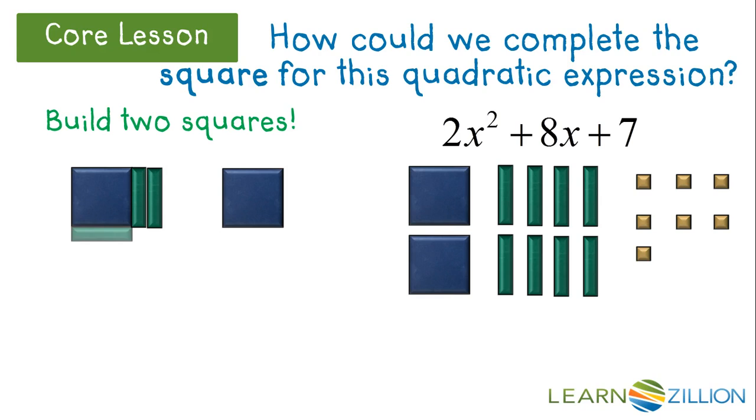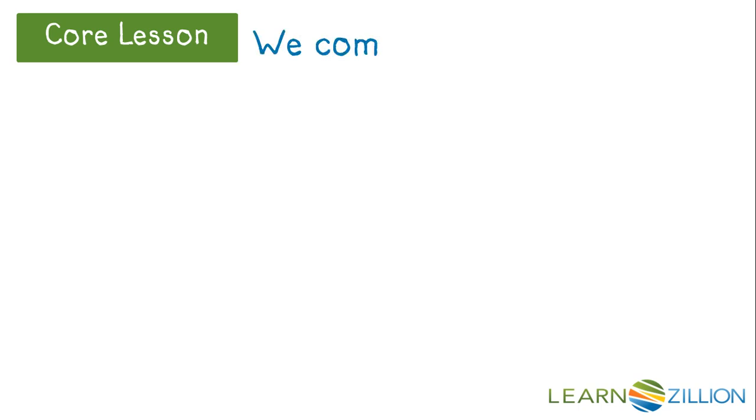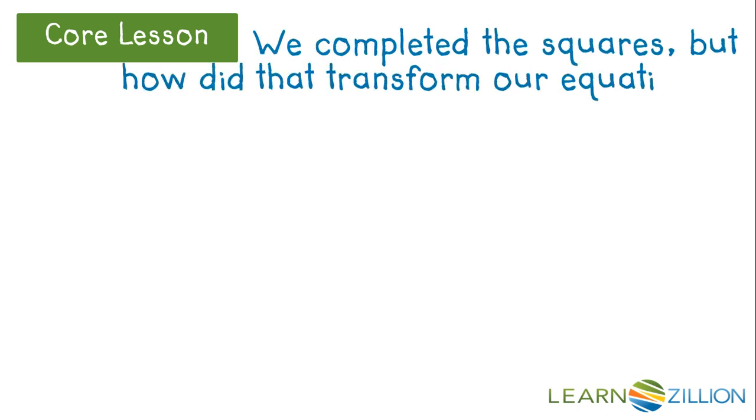So, 2x's. 2 more x's. 2 more. 2 more. Plus the 7, and we almost completed both squares. How many more 1's to finish the square? Just one. We completed the squares, but how did that transform our equation?